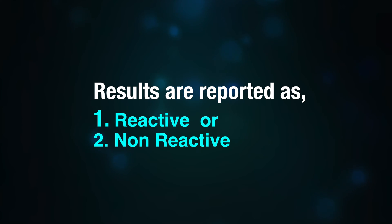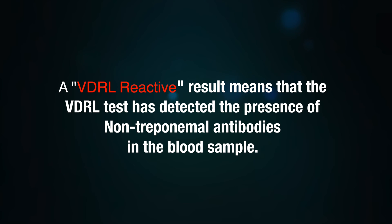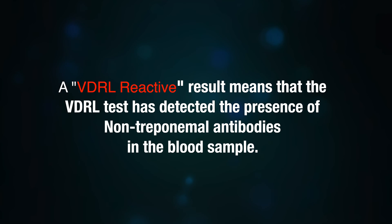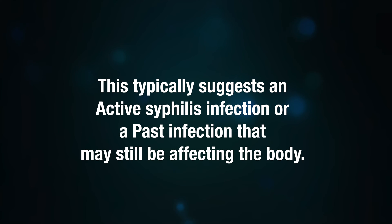Results are reported as reactive and non-reactive. A VDRL reactive result means that the test has detected the presence of non-treponemal antibodies in the blood sample, which typically suggests an active syphilis infection or a past infection that may still be affecting the body.